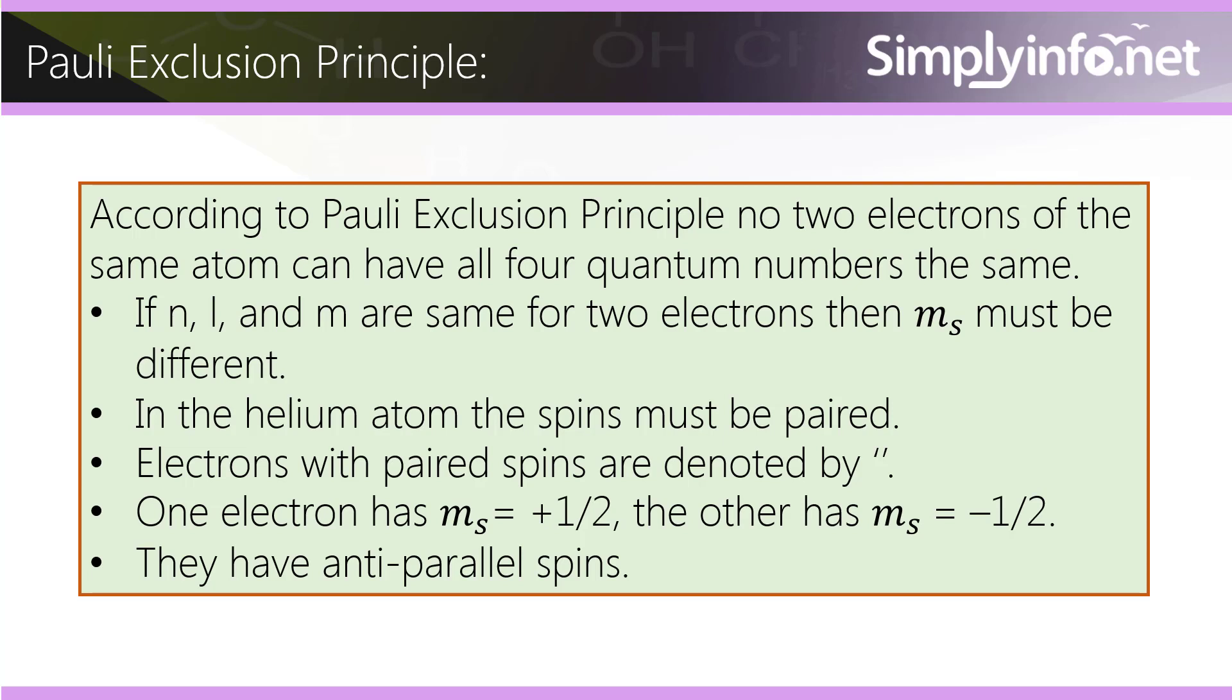In the helium atom, the spins must be paired. Electrons with paired spins are denoted by quotation marks. One electron has ms equal to plus 1/2 and the other has ms equal to minus 1/2. They have anti-parallel spins.